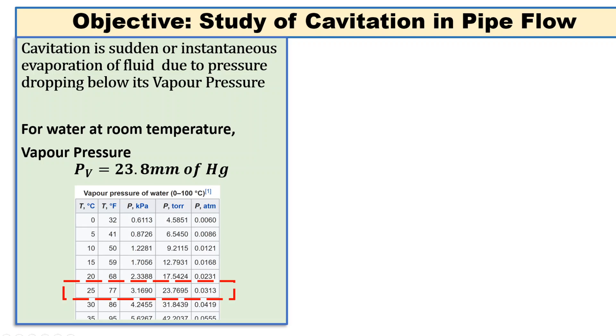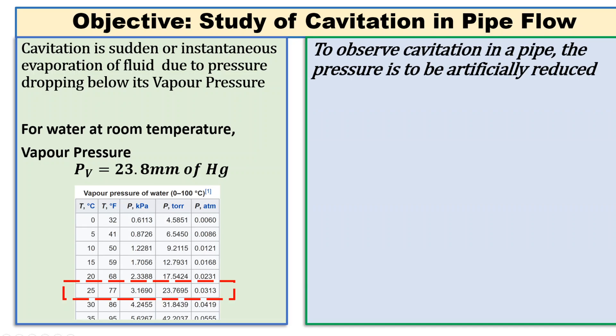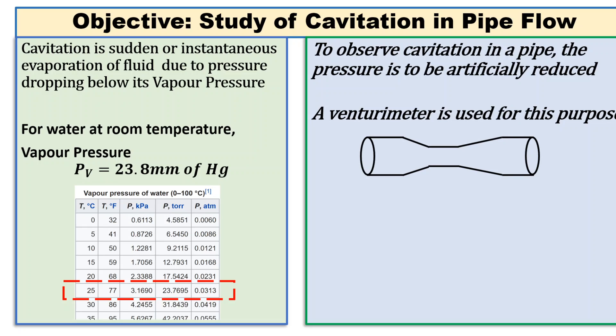Cavitation is achieved in the laboratory setup by using a venturi tube or a venturi meter. A venturi meter is a pipe section where the mid portion is reduced in diameter, which is also called the throat.